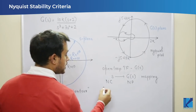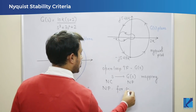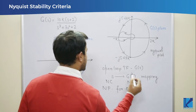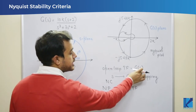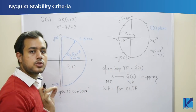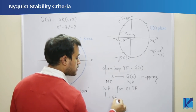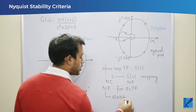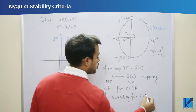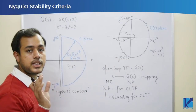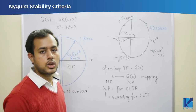The Nyquist plot is always drawn for the open loop transfer function. Whenever we draw the Nyquist plot, we consider the open loop transfer function. It is drawn on the basis of the OLTF, but it can also give stability information for the closed loop transfer function. That is, we draw it for open loop, but we can derive the stability for the closed loop.